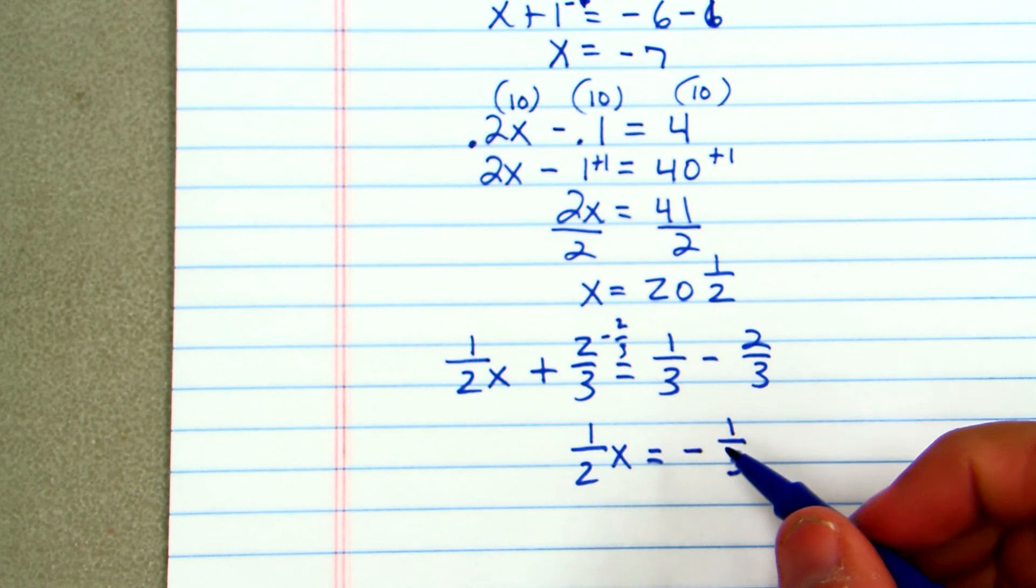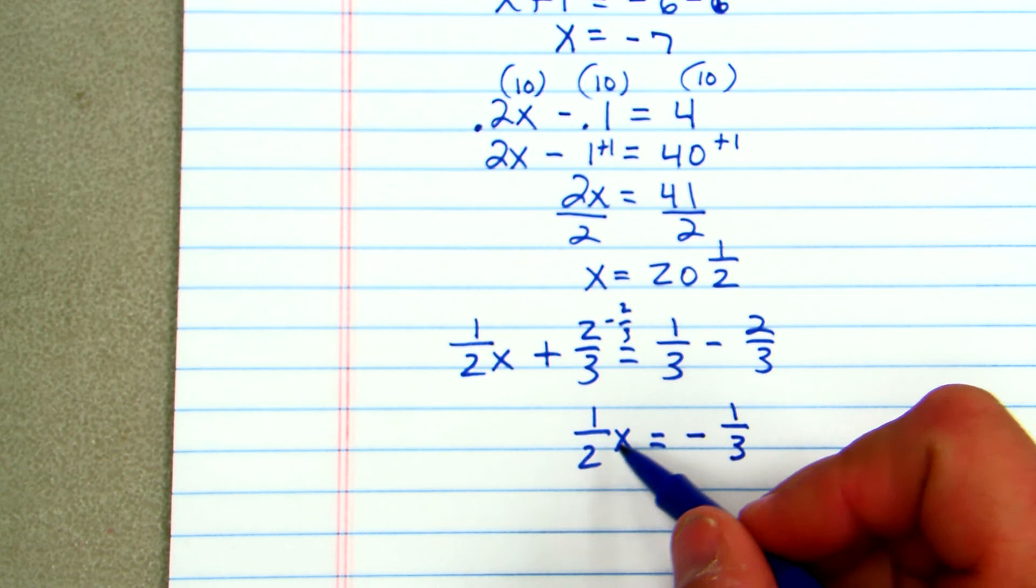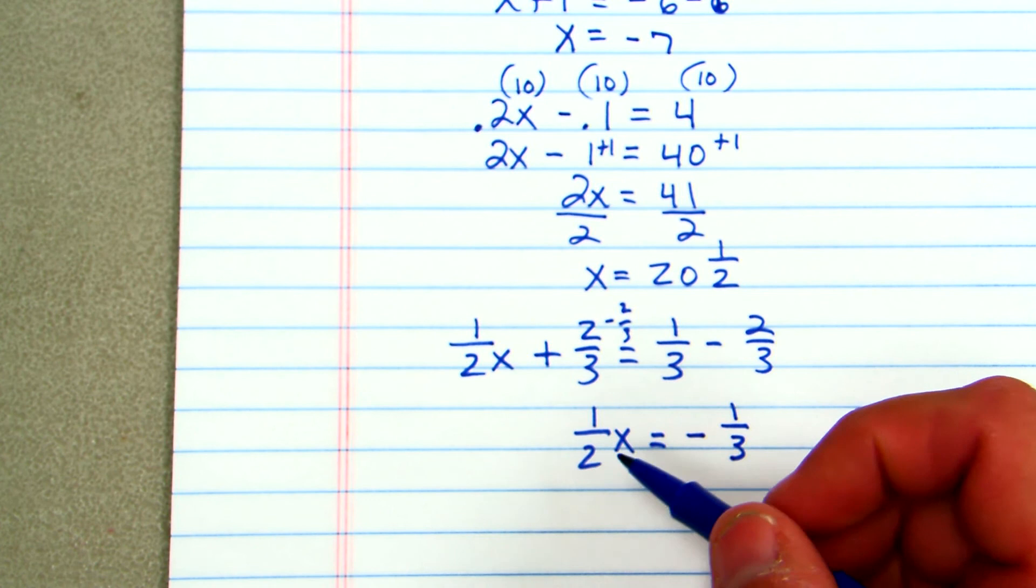All right, now I've got to get rid of the 1 half x. Well, x is being multiplied times 1 half. So the opposite of multiplication is division. But when we divide fractions, we flip the second and multiply.